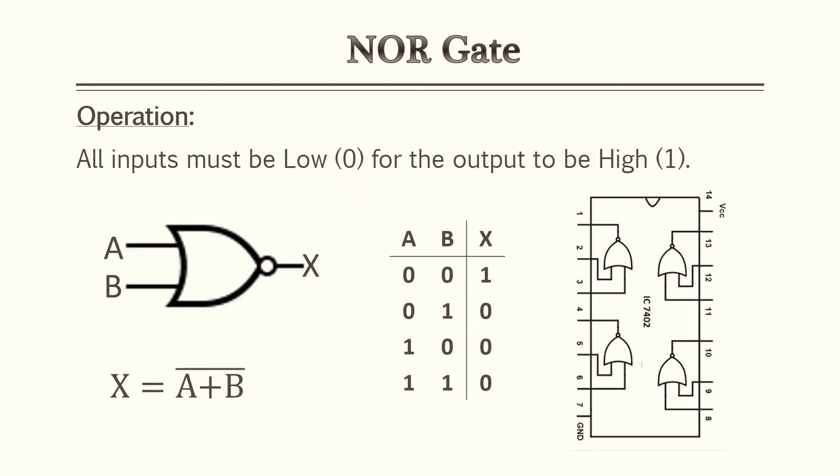The other universal gate is also known as the NOR gate. Just like the NAND gate, we can use the NOR gate in various combinations to make other gates, which we'll cover in the combinational logic lesson. The operation of the NOR gate: all inputs must be low for the output to be high. Both A and B must be low or zero for a high output. In Boolean algebra, this is expressed as A plus B with a NOT over the whole equation — same as an OR gate but with an inverter at the end, hence the bubble.